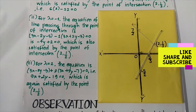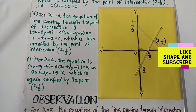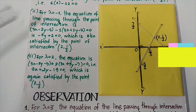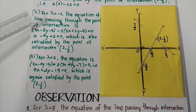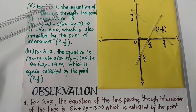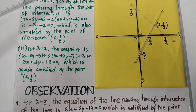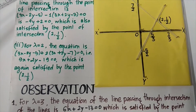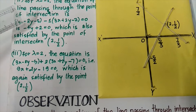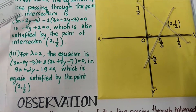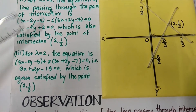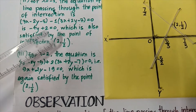On taking the value of lambda equals to minus 1, the equation of the line passing through the point of intersection is 3x minus 2y minus 5 minus 1 into 3x plus 2y minus 7 equals to 0. On solving, the new equation minus 4y plus 2 equals to 0 is obtained, and this satisfies the point of intersection (2, 1/2).